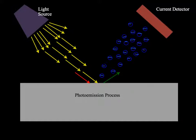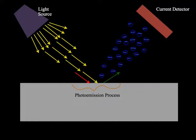The reason this experimental setup works is because of what we call the photoemission process, which is the process of the photoelectric effect. From all that we've talked about so far, we know that this light source shines light down onto the surface of the metal, and for some reason, that will cause electrons to be ejected from the surface of the metal. This suggests that the light is bringing some sort of energy to the surface that's energizing these electrons, and they're being emitted.